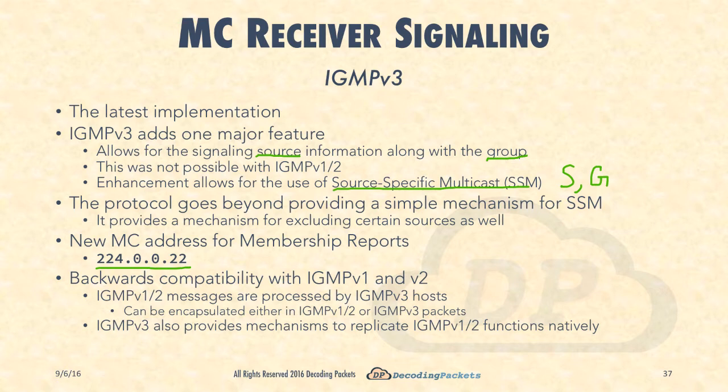Another thing it allows for streamlining is IGMP snooping. IGMP snooping is essentially layer 2 switches sitting between a receiver and a last hop router, allowing them to build states on the switch port so they don't have to treat multicast as broadcast anymore. We will be doing a separate lecture on IGMP snooping, and at that time you'll realize that 224.0.0.22 makes IGMP snooping a little bit more efficient.